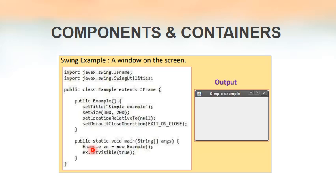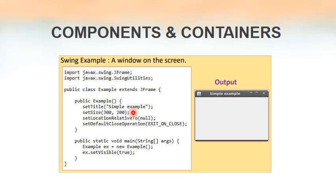In the main method, we create one object named ex of class Example. Since Example is a child of JFrame, ex is itself a JFrame, and the constructor executes all those lines. We use the setVisible method — only if we call this method with the parameter true will the frame actually be displayed on screen.